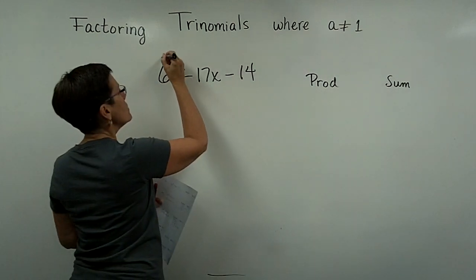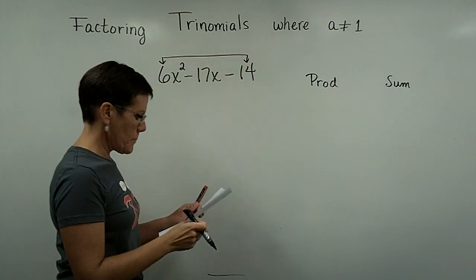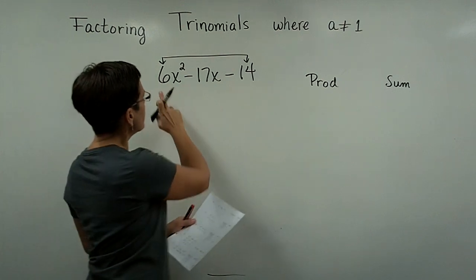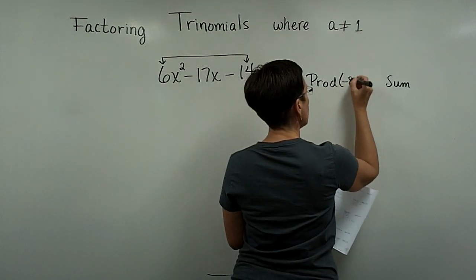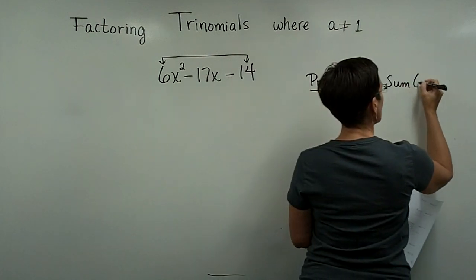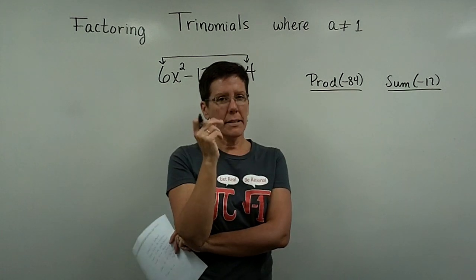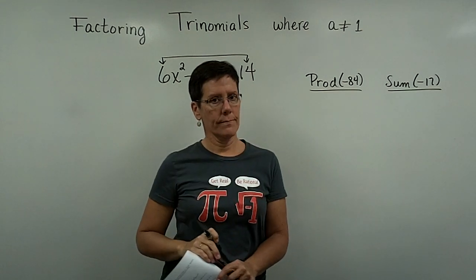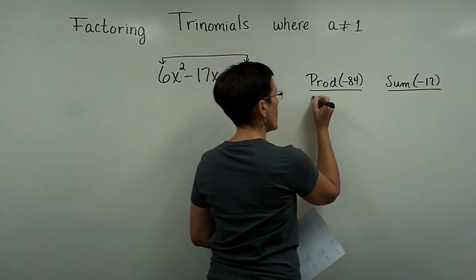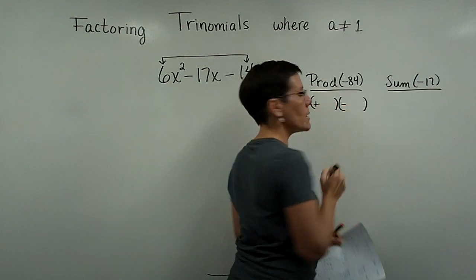And I would like two numbers whose product is a negative 84. Six times a negative 14, product is a negative 84, and I want them to add to be a negative 17. So let's see, product has to be a negative number, negative 84, so one's got to be a plus sign one's got to be a minus sign.